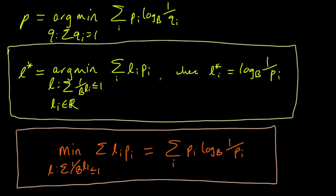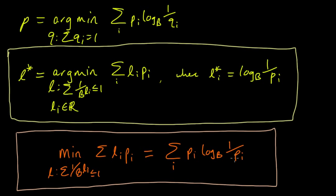Now let's think briefly about the simplifying assumptions we made. One assumption was that we allowed the lengths to be arbitrary real numbers, but we certainly need them to be non-negative. Was our solution non-negative? Well, the pi's are all positive and less than one, so we're taking the log of something greater than or equal to 1, which means the log is non-negative. So the lengths we get are indeed all non-negative numbers — that simplifying assumption actually gave us a valid result.